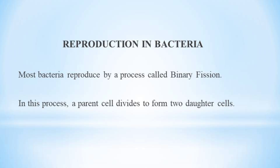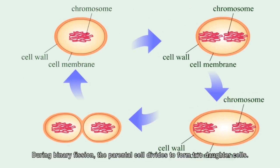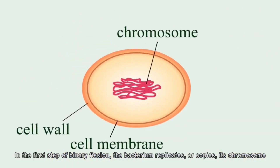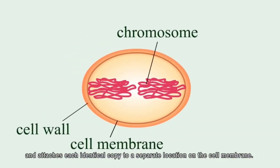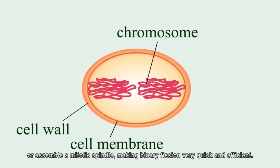Most bacteria reproduce by a process called binary fission, in which a parent cell divides to form two daughter cells. During binary fission, the bacterium first replicates its chromosome and attaches an identical copy to a separate location on the cell membrane. Unlike eukaryotic cells, bacteria do not need to dissolve a nuclear membrane or assemble a mitotic spindle, making binary fission very quick and efficient.